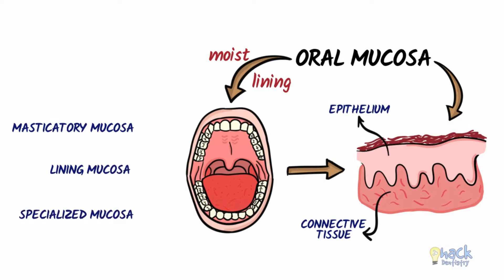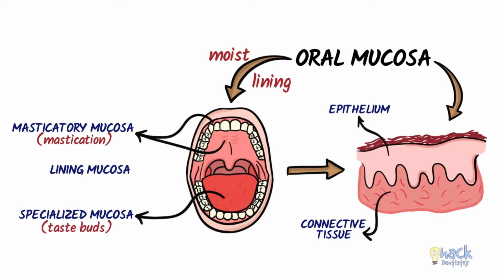The gingiva and hard palate constitute the masticatory mucosa and bear the forces of mastication. The dorsum of the tongue forms a specialized mucosa because of the presence of taste buds which have a sensory function, and the rest of the oral cavity, amounting to at least 60%, is lined by lining mucosa.